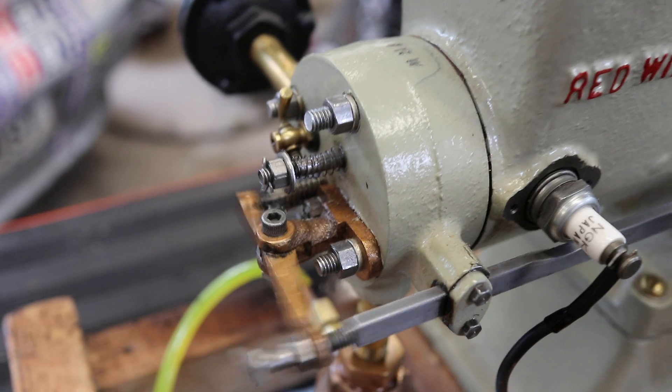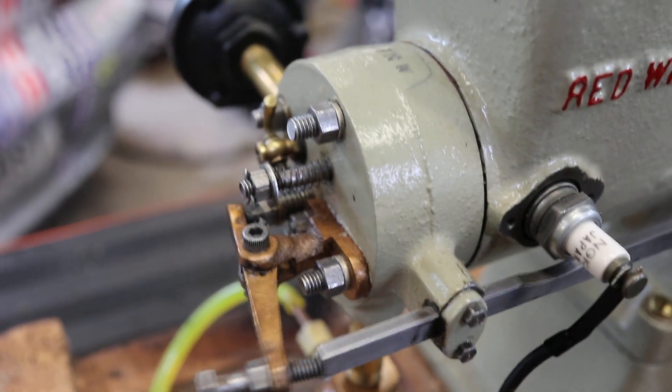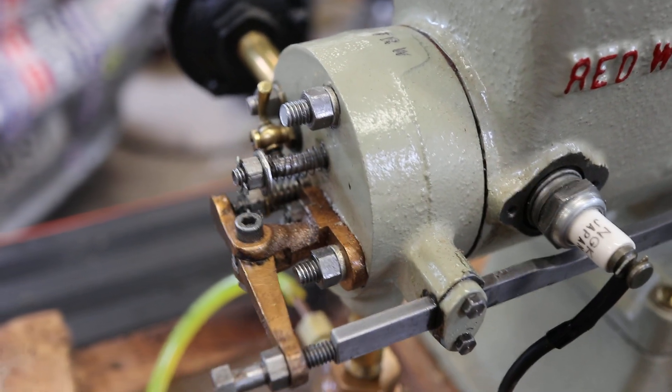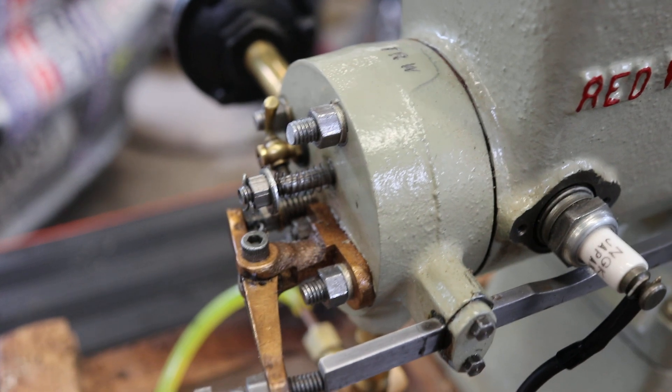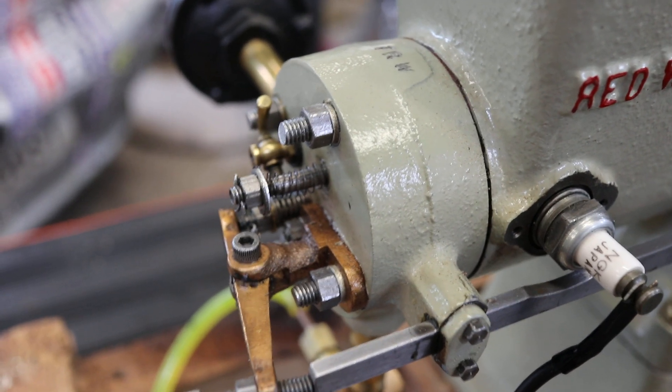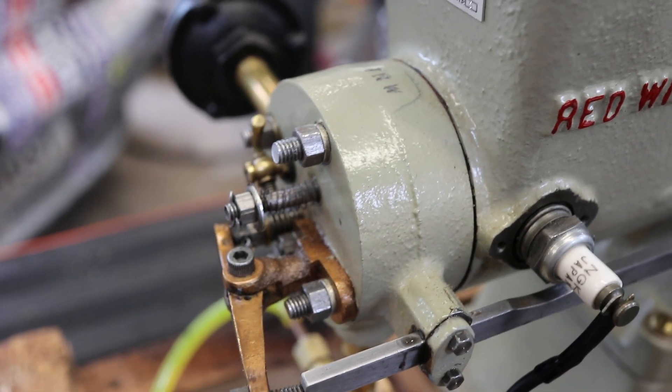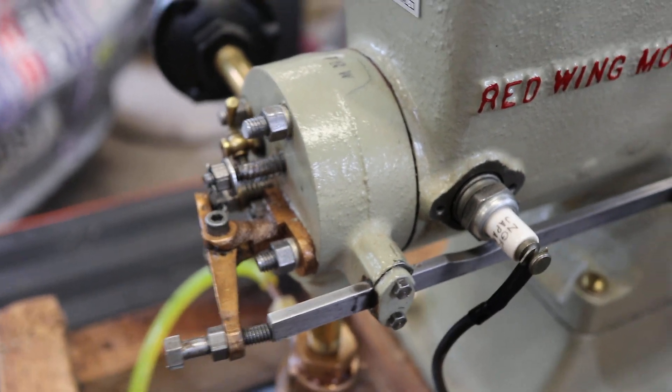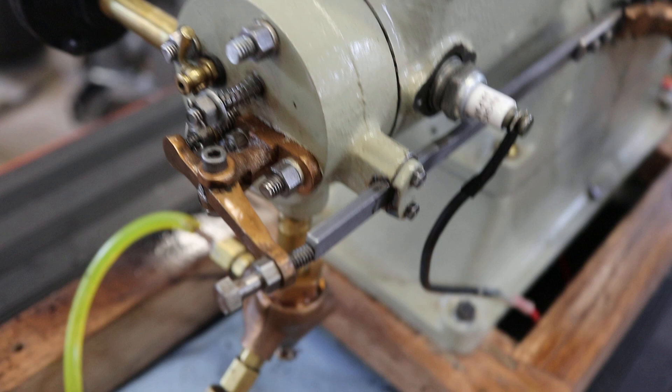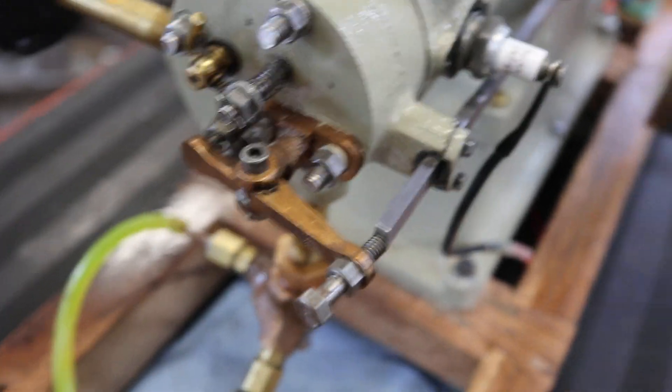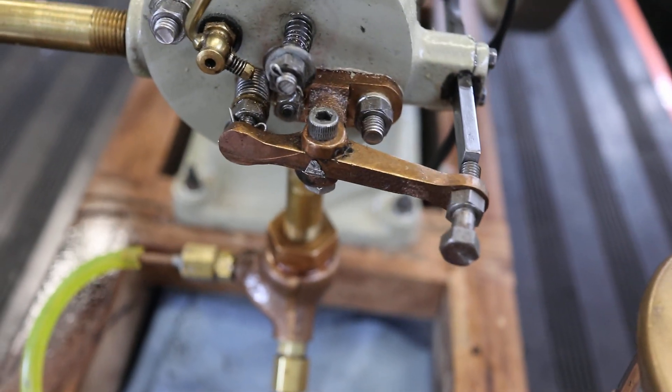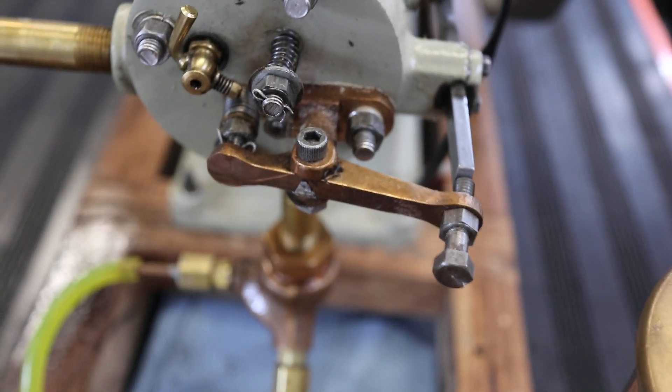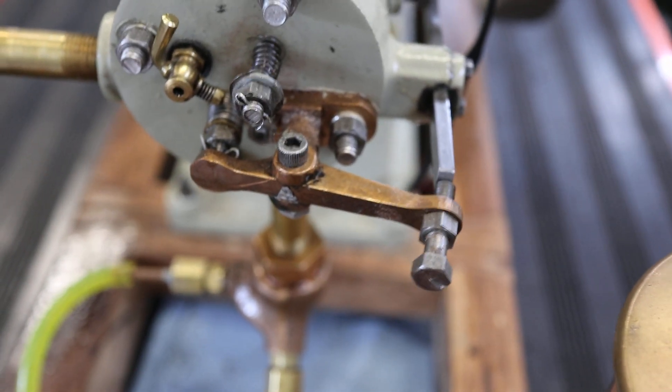And this is your intake valve here and it's just got a very lightweight spring on it. When you see it move in it's moving in just from the suction of the piston as the piston is on its intake stroke, it creates enough suction to suck the air and the fuel in from the mixer. And then the exhaust valve is actuated by this rocker arm. So the exhaust valve is being held open and then it closes, fires and it's held open again.